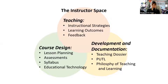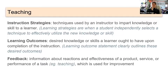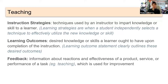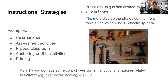Let's walk into the instructor space. There are three spheres — sort of like a Venn diagram — so assessments could also be within teaching; these aren't hard lines. In the teaching space: instructional strategies, learning outcomes, and feedback. Instructional strategies are techniques used by an instructor to impart knowledge to the learner. Learning strategies are when the student independently chooses a knowledge-gaining tool. Outcomes are the desired knowledge — what the learner should have once instruction is completed. Feedback is information about the effectiveness of teaching, used for improvement.